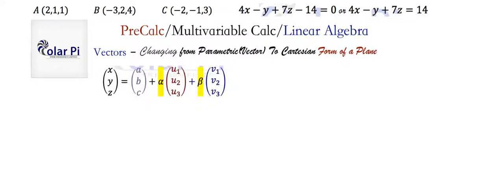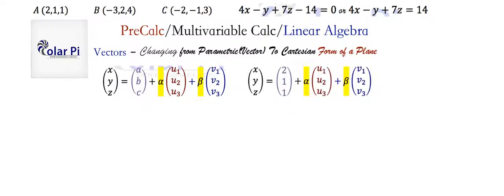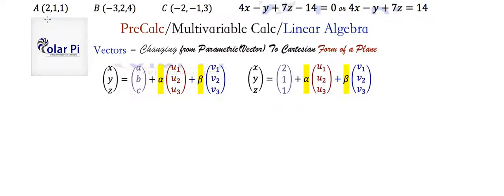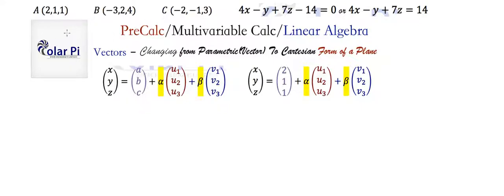The vector equation of a plane is written where this u vector is a direction vector, as is this v vector, and this vector here is the position vector of a point on our plane. For the point on our plane, we have three choices — let's use point A, so that means we've got (2, 1, 1) here. Then we need to make the position vectors: the u vector and the v vector. To make them, we could use the vector AB and the vector AC. For the vector AB, which is going to be our direction vector u, we subtract the coordinates of A from the coordinates of B, and so that gives us our u vector.